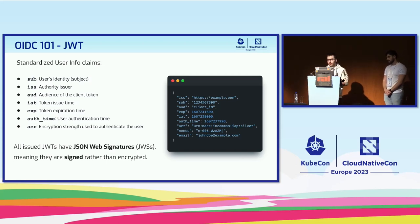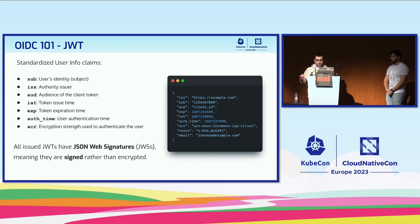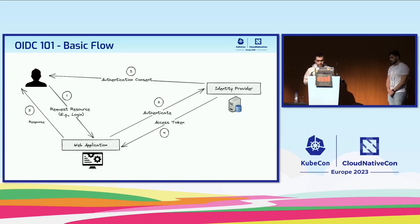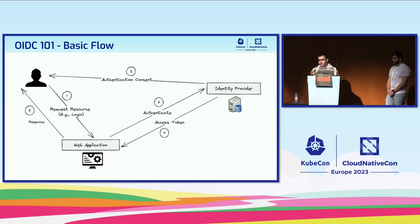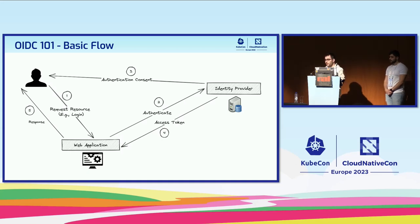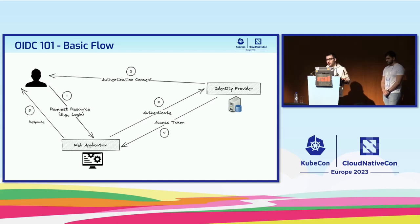How does a JWT look? One of the benefits of OIDC is that it standardizes some of the claims and fields in this token. The most popular one is the subject - the identity of the user or machine - which can be used to grant permissions. There's also the issuer, which is the authority that issued the token, plus the token issue time, expiration, and many more fields. All JWTs have signatures signed by the issuer - they are signed rather than encrypted.